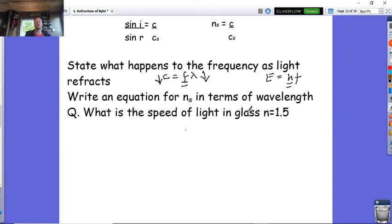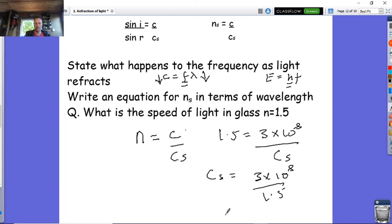What they start then is asking you to work out the speed of light in different substances. It's dead easy. All you use is n equals c over cs. In this case, when you've got glass, I know n equals 1.5 and the speed of light in a vacuum or air is 3 times 10^8. So cs equals 3 times 10^8 divided by 1.5, which equals 2 times 10^8 meters per second.